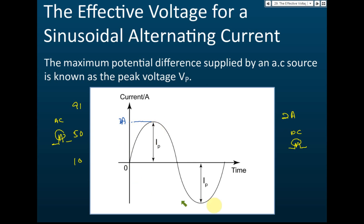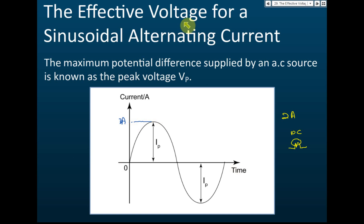So you cannot take this 3 amperes and compare it to the 2-ampere direct current, because 3 amperes is just the maximum — the highest. If you want to compare, you must compare the effective voltage or the effective current.